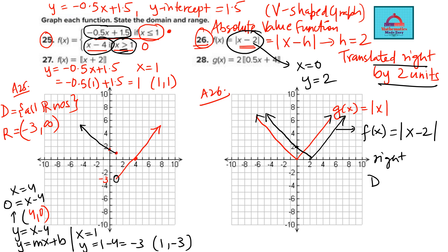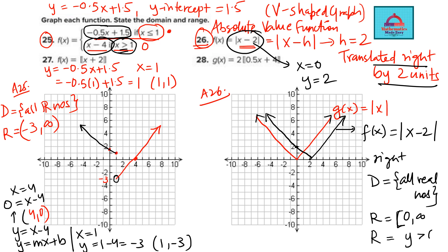For the domain and range of the absolute value function: domain is all real numbers — all positive, negative, and zero values. Range is only non-negative values, from 0 to infinity, closed at 0, since the absolute value function always gives a positive or zero result. In set builder notation, range equals the set of all y such that y is greater than or equal to 0, or equivalently the set of all f(x) such that f(x) is greater than or equal to 0. All forms are accepted answers.